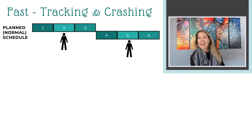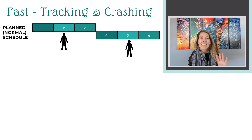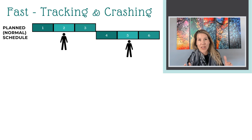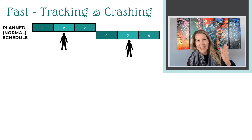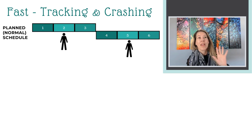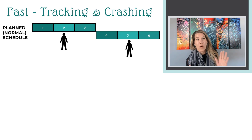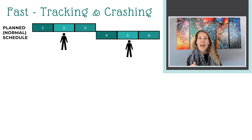Let's take a look at a visual, and then I'll give you some examples. Let's say that this is our current project schedule — this is how we planned it, the ideal way to complete it. We're going to complete task 1, then task 2, then task 3, with a specific resource assigned. Then we have a separate resource that is going to be working on task 4, task 5, and task 6.